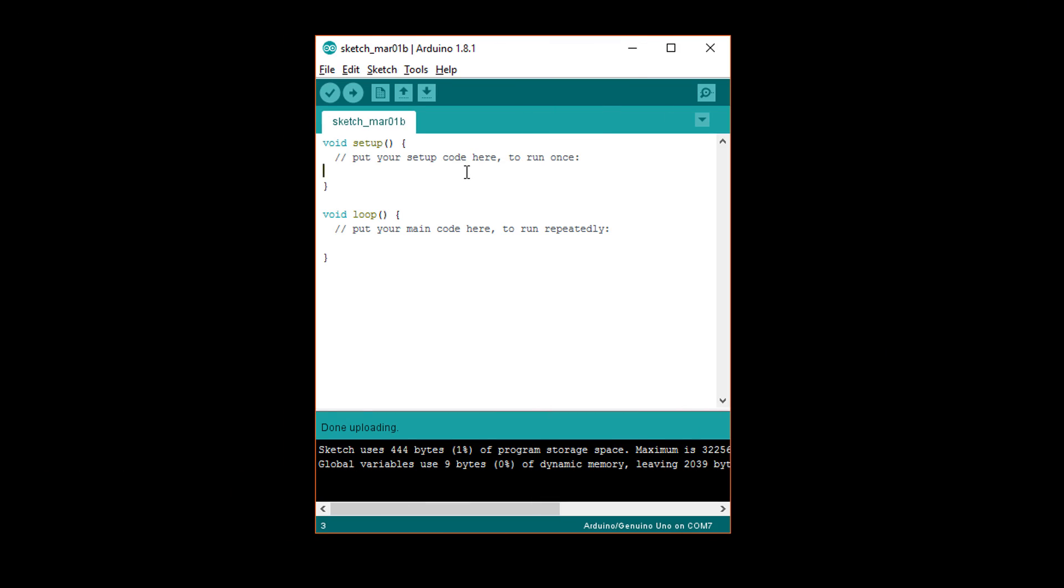we want to first set pin 13 as output. The function for that is pinMode, so write pinMode, open parentheses, 13, comma, space, OUTPUT in all capital letters, close parentheses, semicolon, in the setup function. You can leave the lines that begin with the two slashes. They're comments and will be ignored by the compiler.